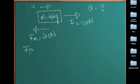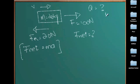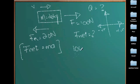Using F_net = ma, I'll set up an arbitrary axis where rightward is positive and leftward is negative. Summing the forces: F_net = 100 − 20 = 80 newtons. Substituting into the formula: 80 = 20 × a, so a = 80 ÷ 20 = 4 meters per second squared. The acceleration is always in the direction of the resultant force. Since the net force is positive 80 newtons, the acceleration is in the positive direction at 4 meters per second squared.